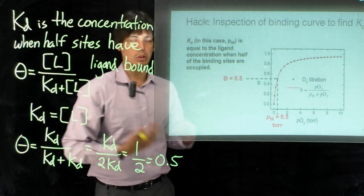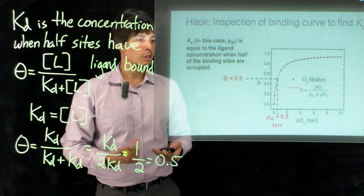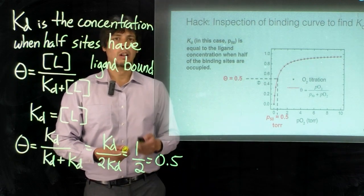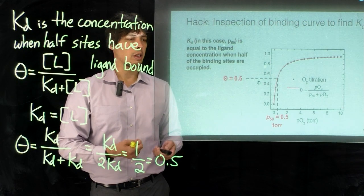So in this case, again because we're using the oxygen pressure as our ligand concentration, this crosses at P50 of 0.5 torr and that helps us just be able to determine that's the number that we have for KD.